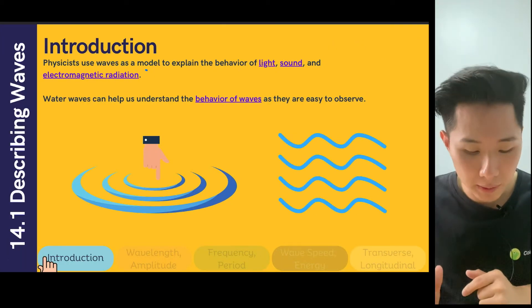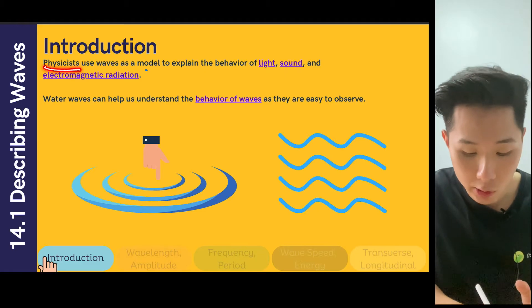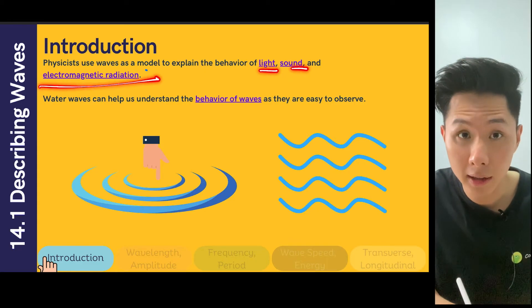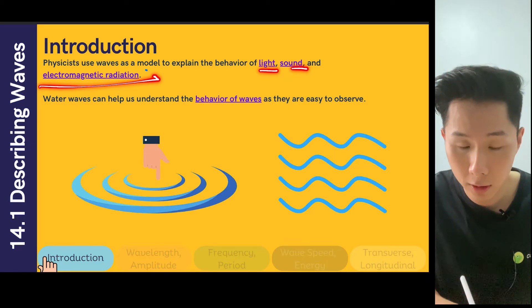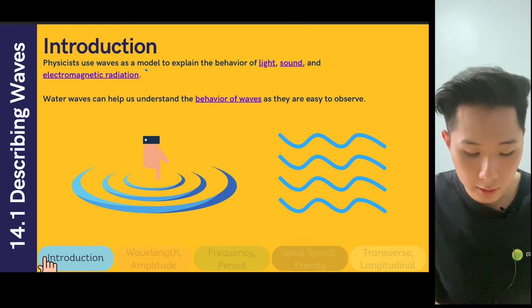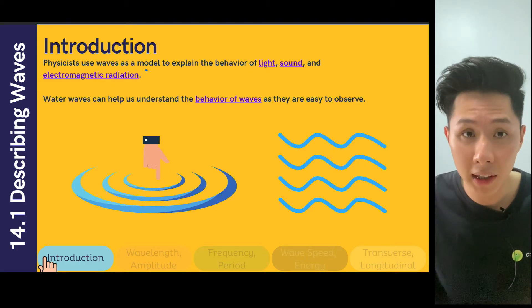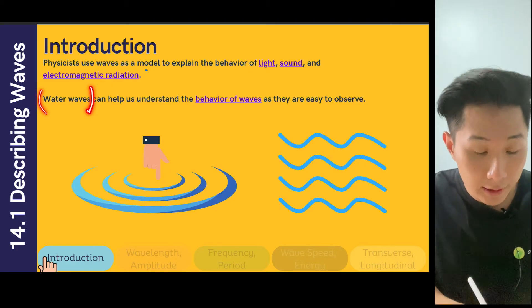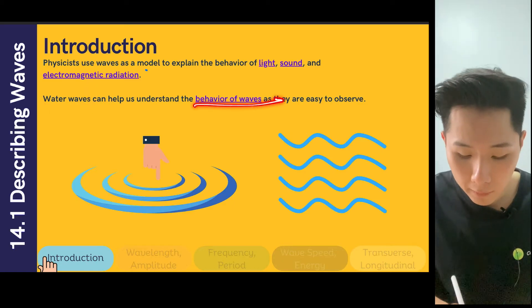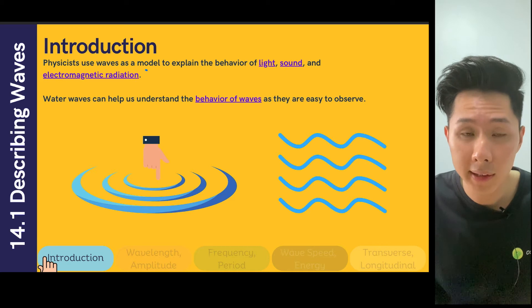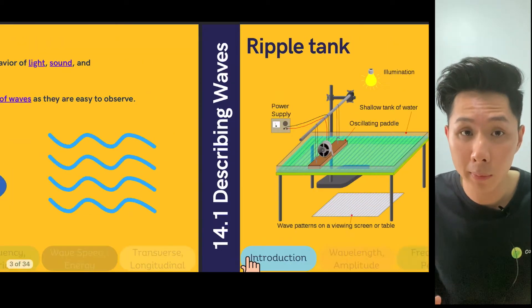Wave is important because it is a tool that physicists use to explain the behavior of light, sound, and electromagnetic radiation. All these different theories are sort of related to wave. One wave that we see in our day-to-day life is water wave, and they are very useful in helping us understand how the behavior of waves is like because it's very easy to observe them.